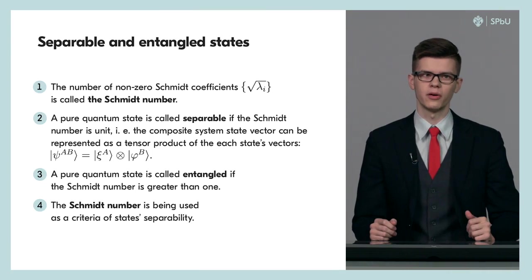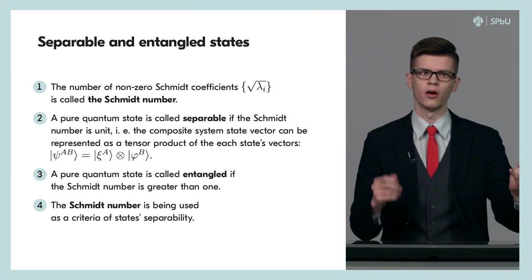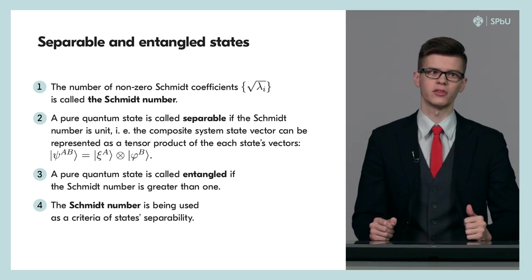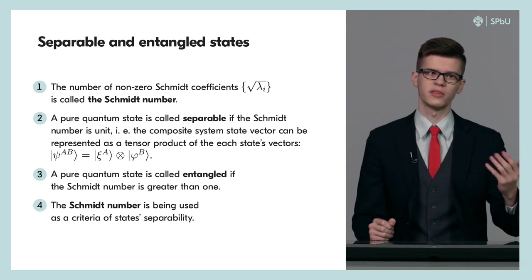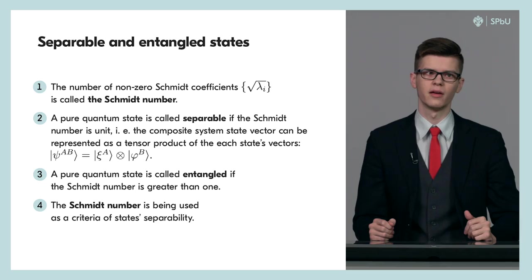We have the Schmidt theorem proved. Let us now discuss how to find out whether the pure state is separable or not using the theorem. It's quite simple. Suppose we have a certain physical system and the Schmidt decomposition for its pure state vector Psi sub AB. The number of non-zero Schmidt coefficients is called a Schmidt number. In other words, the Schmidt number is the number of terms in Schmidt decomposition.